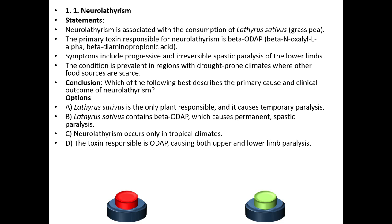The condition is prevalent in regions with drought-prone climates where other food sources are scarce. Conclusion: Which of the following best describes the primary cause and clinical outcome of neurolathyrism? Option A: Lathyrus sativus is the only plant responsible and it causes temporary paralysis. Option B: Lathyrus sativus contains beta-ODAP which causes permanent spastic paralysis.